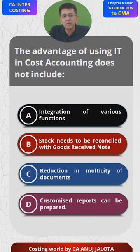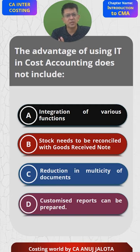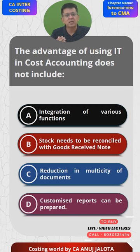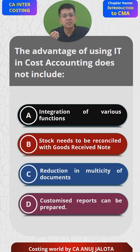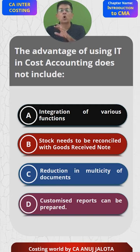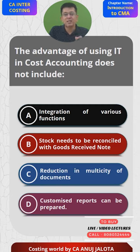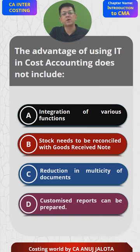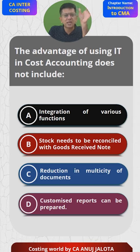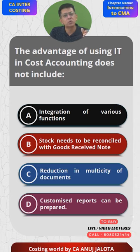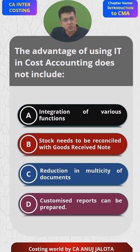Reduction in multiplicity of documents is a basic advantage. When computerization was not there, a lot of documents had to be generated for each and every need. But now databases get shared. For example, we have one database of all customers in India. For a sales manager covering Maharashtra, we don't type the entire data again - we just filter and give him access only to the data of customers in Maharashtra.